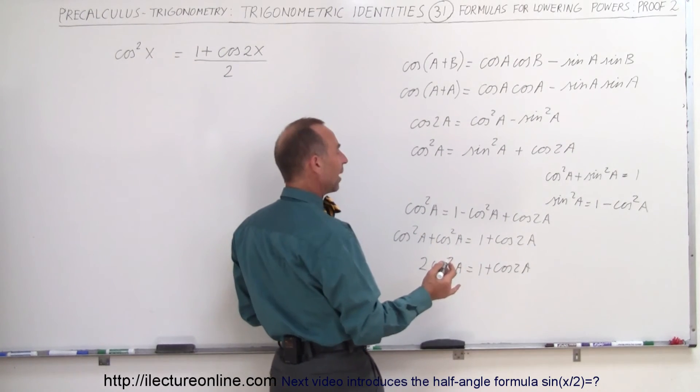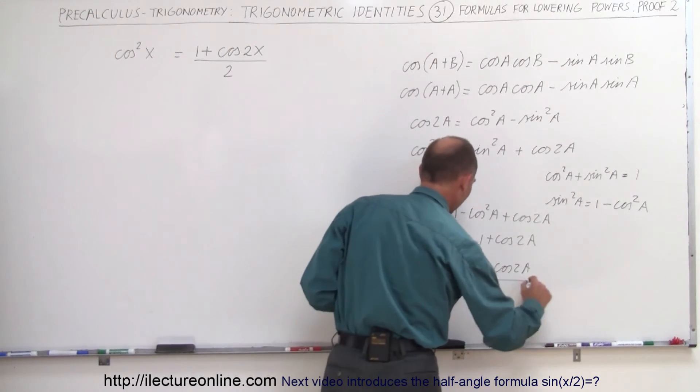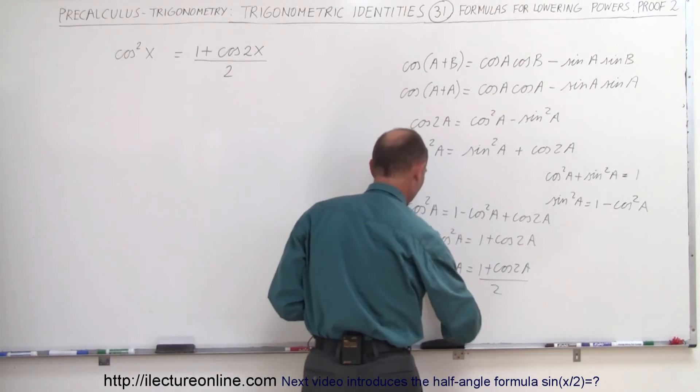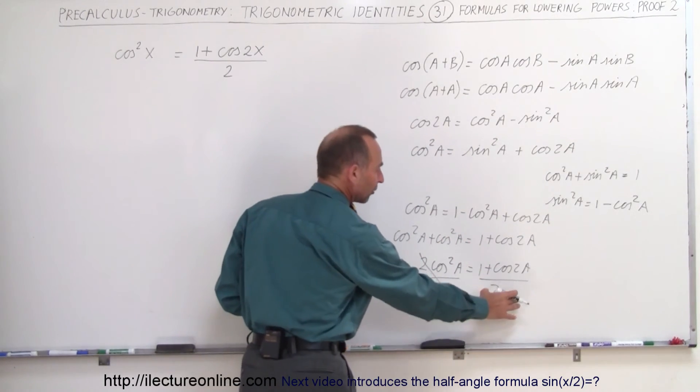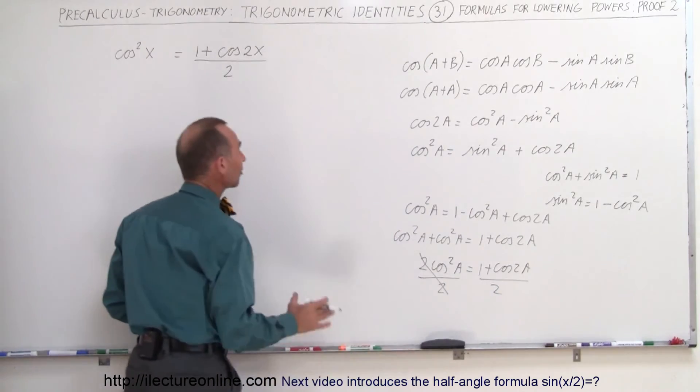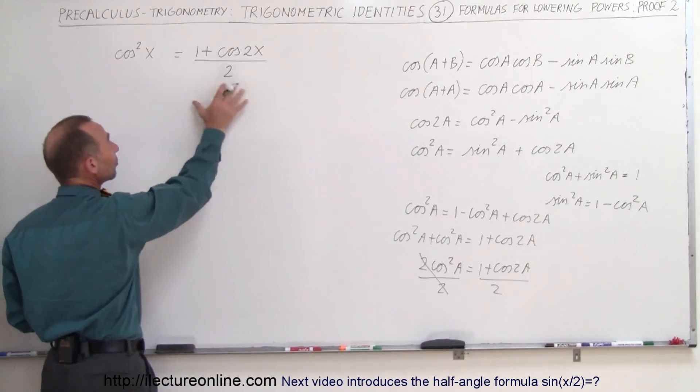And then if we divide both sides by 2, this cancels out and so now we have the cosine squared of a is equal to 1 plus the cosine of 2a divided by 2, which is exactly the same as what we have over here except we use x instead of a.